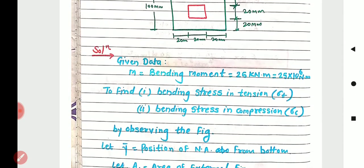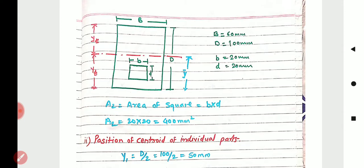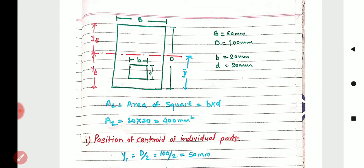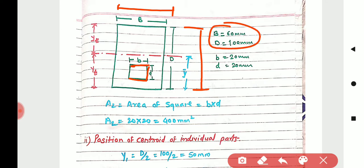By observing the figure, redraw the diagram. Consider horizontal dimension capital B, vertical dimension capital D for the external section, and internal dimensions small b and small d. Note down the dimensions separately.